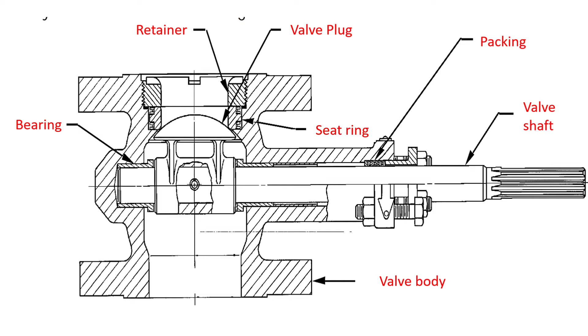The different components you can see here are: the valve shaft, packing, seat ring, valve body, valve plug, retainer, and bearing.